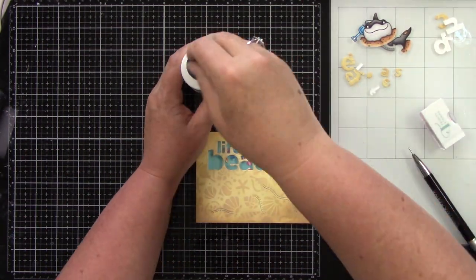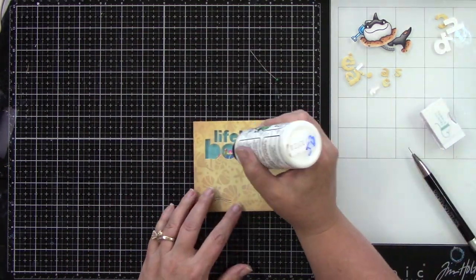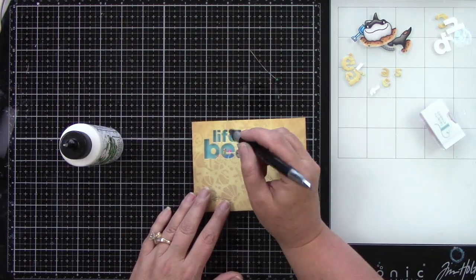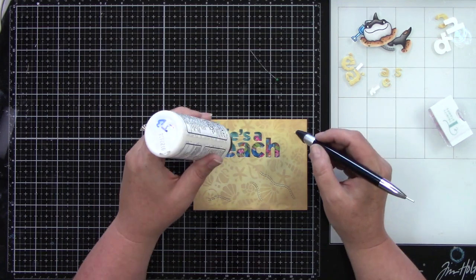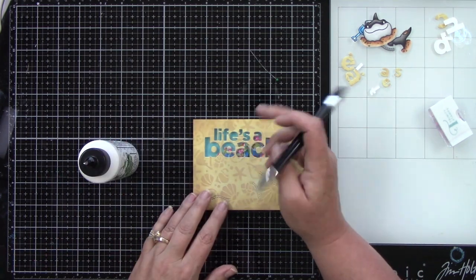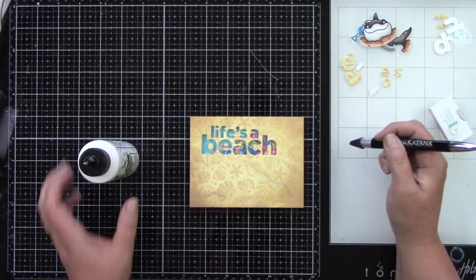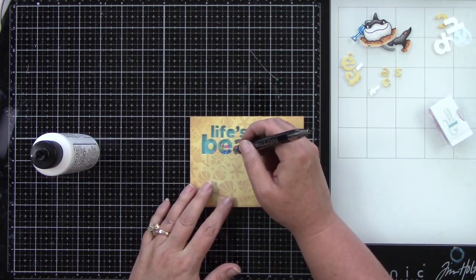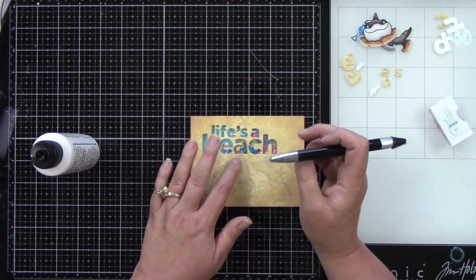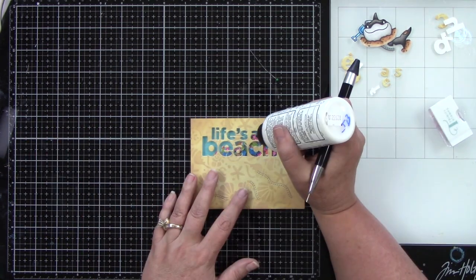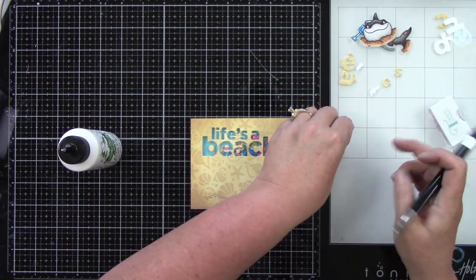We need to now add those little pieces on our sentiment. For the little circle for the B, you have it for the E and the A's. So the life's a beach, all the E's, A's, and B's, you have to add those little pieces back on. You want to make sure you don't lose that.